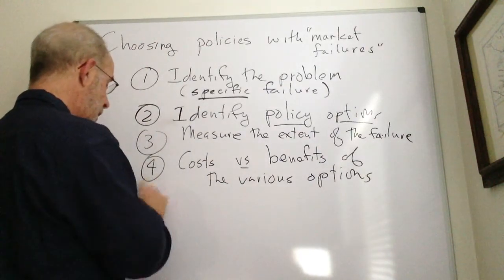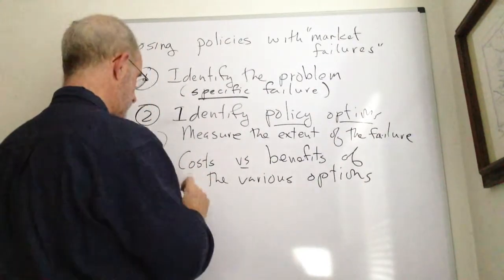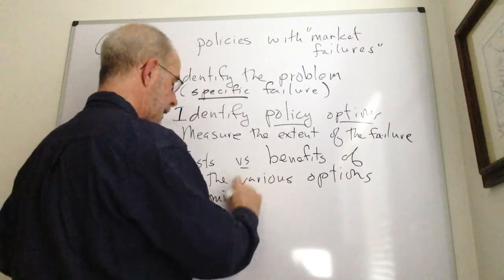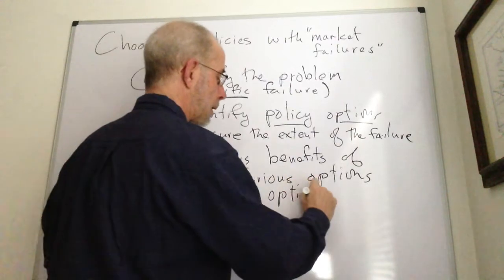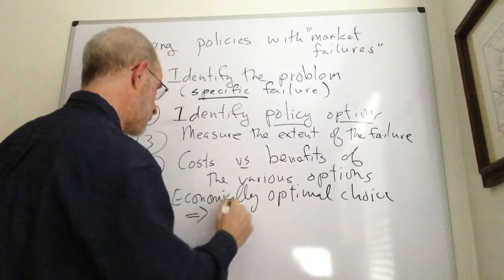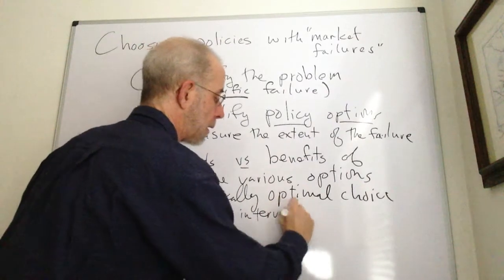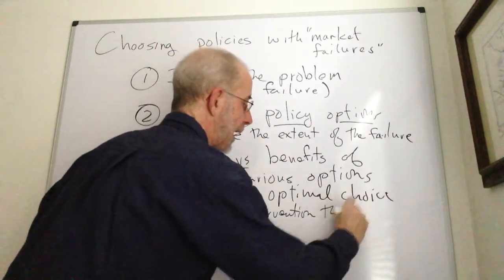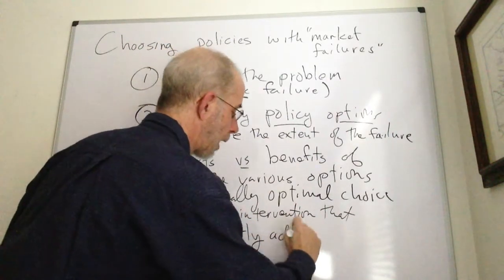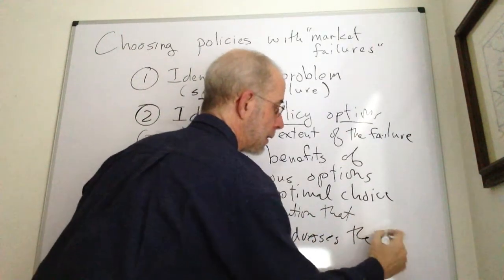And broadly speaking, the economically rational choice, the economically optimal choice, is going to be the policy, the intervention that directly addresses the failure.